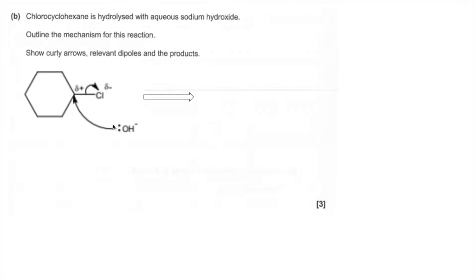So we draw the curly arrow must go from the lone pair to the slightly positive carbon atom. And then ideally from the middle of the bond onto the halogen. And that's going to generate the product. So we've got cyclohexanol there and a chloride ion.